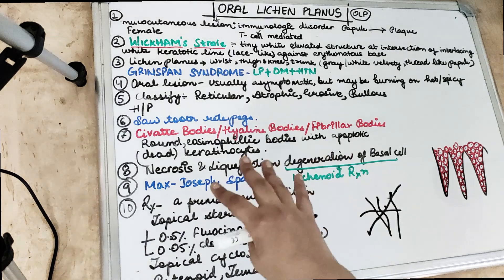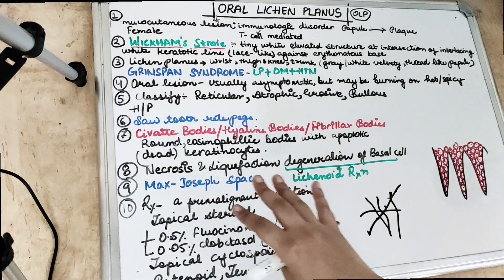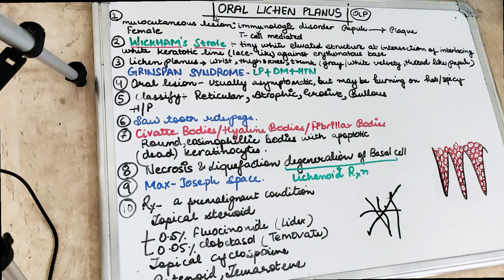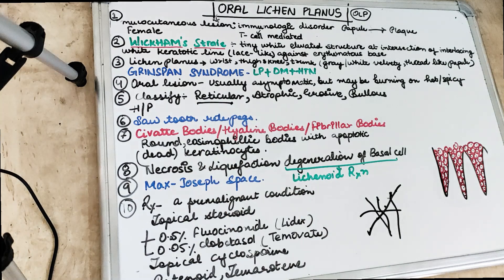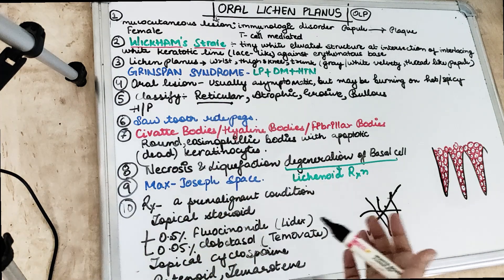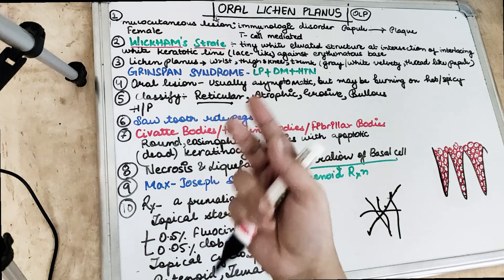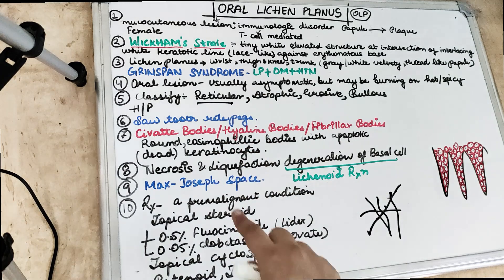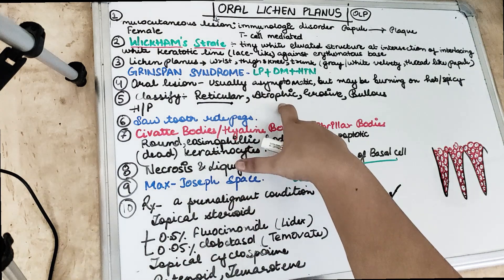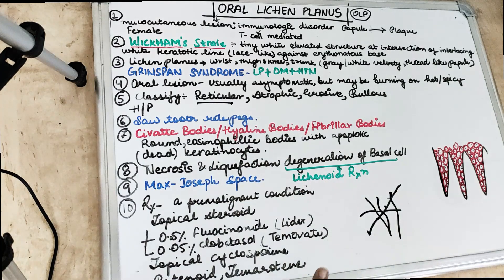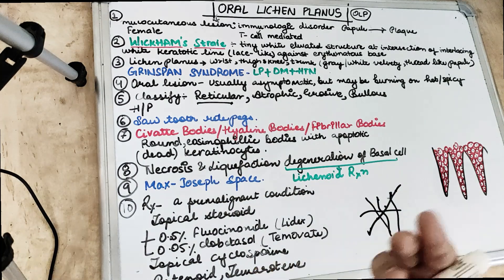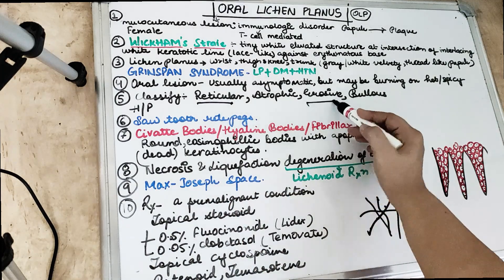Oral lichen planus has many forms. The reticular form is the most common, characterized by lace-like keratotic mucosal configurations. The atrophic form, as the name suggests, shows mucosal atrophy along with keratotic changes. The erosive form features ulceration.